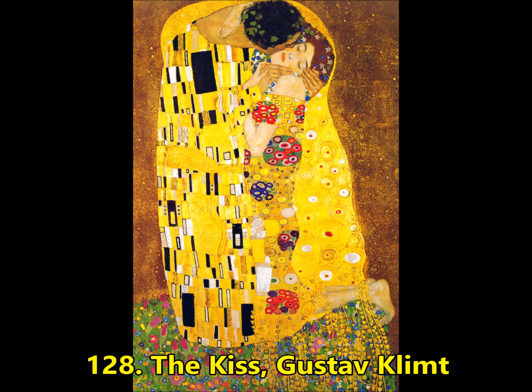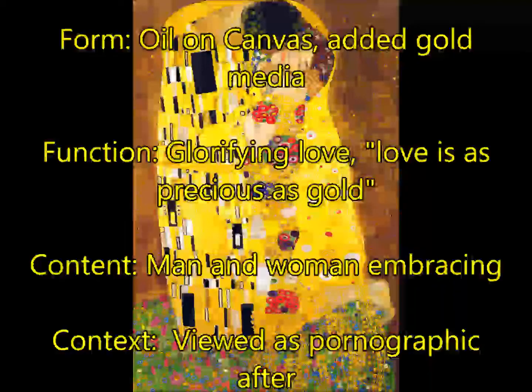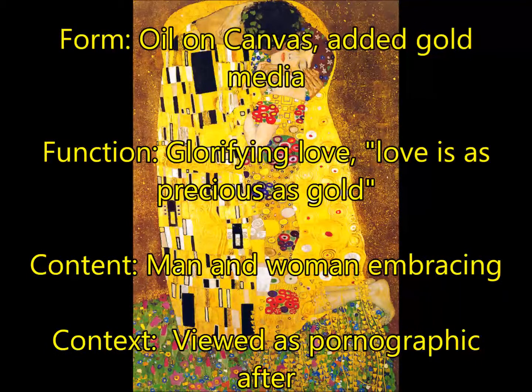Next, we're going to have the first of two kisses — The Kiss by Gustav Klimt. This is an oil on canvas, but it also has added gold media. Pretty much any gold object he could find, including gold leaf or any kind of nugget or object that had a shiny gold finish, was added onto the canvas, so it's somewhat of a collage.